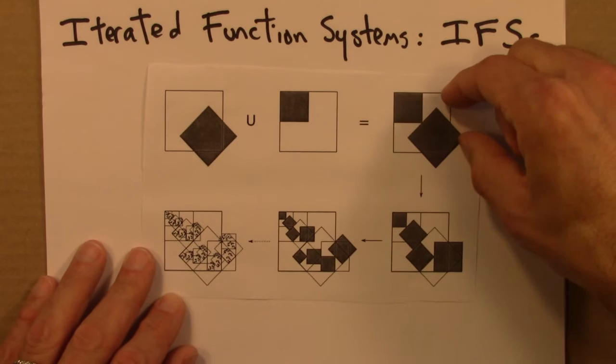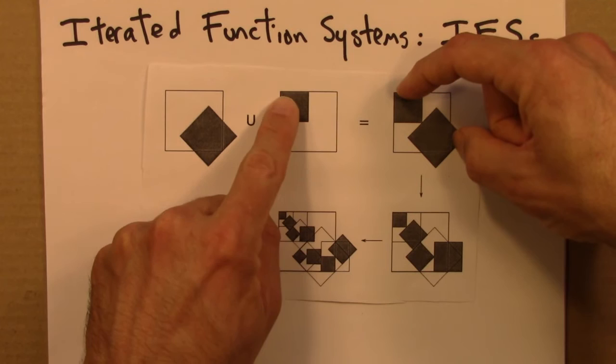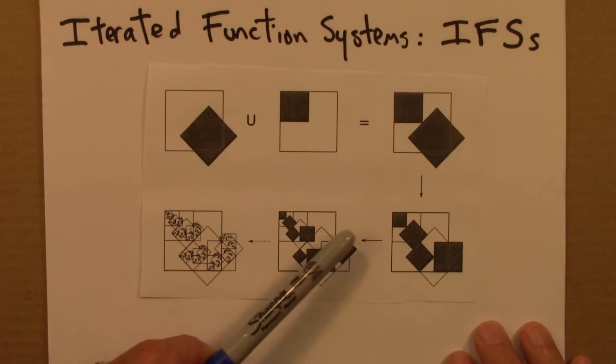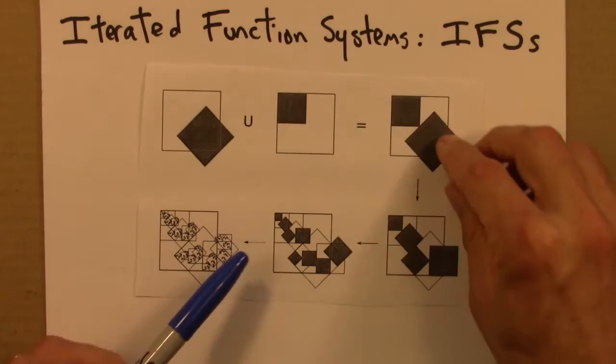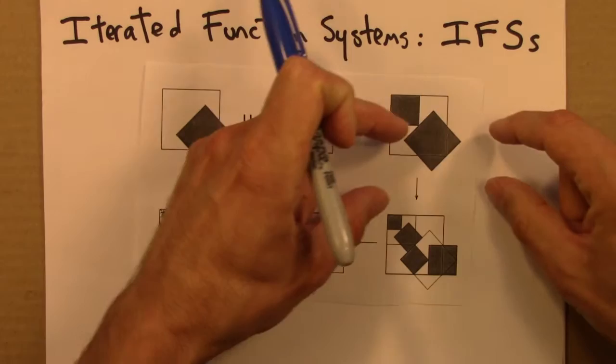We would take this shape and we do two things. We make a smaller copy and slide it up to the left. There's that smaller copy. And then we take this copy and we do what we did here. We make it smaller and rotate it like that. So we take this shape, make it smaller, rotate it like that, and we get that.